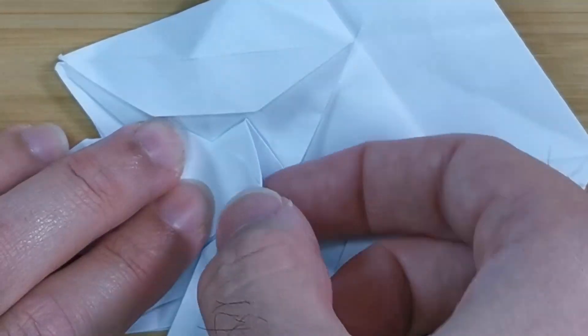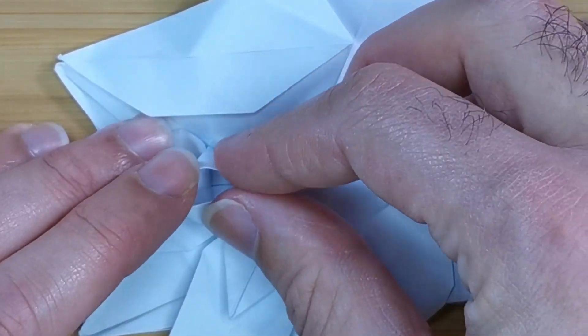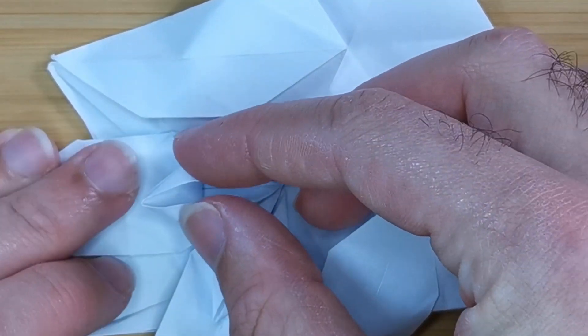Now insert your finger into this pocket and fold the edges to the center, creating a diamond shape.